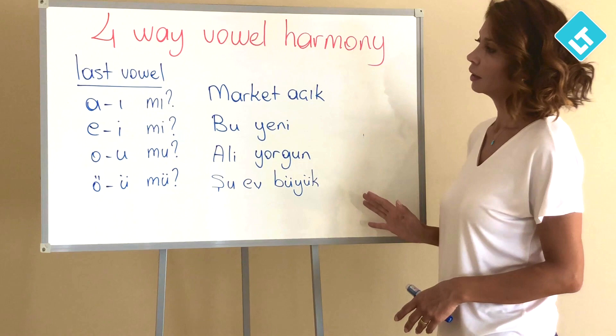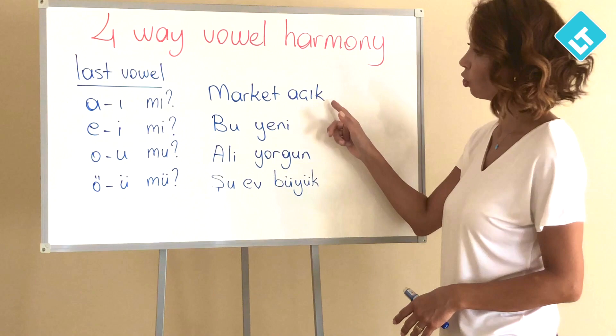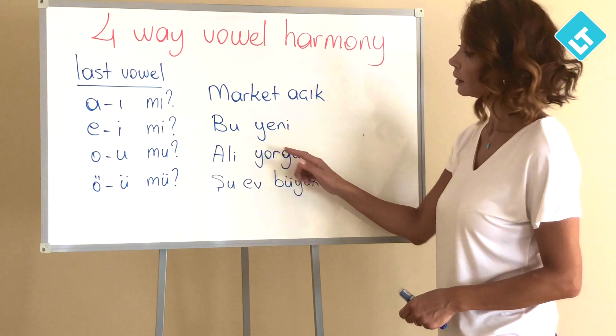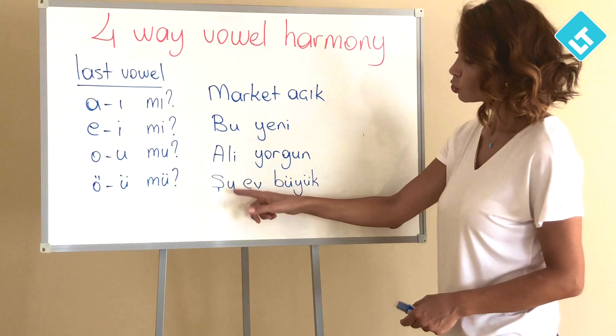Here are the examples. Market açık — the market is open. Bu yeni — this is new. Ali yorgun — Ali is tired. Şu ev büyük — that house is big.